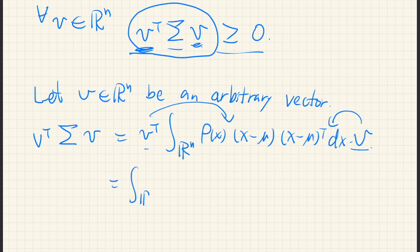Since v is just a constant vector, we can put them inside the integral. So this becomes rho of x, v transpose, x minus mu, x minus mu transpose v dx.